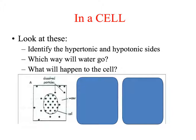Water will move into the cell, causing it to swell. If it's an animal cell and it swells too much, it will burst. If it's a plant cell, the cell wall tolerates that swollen state and nothing bad happens. Gargling salt water works because it causes bacteria cells to lose water — water flees out of the bacteria into the mouth because salty water is more concentrated than the pure water inside the cells.